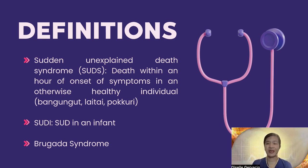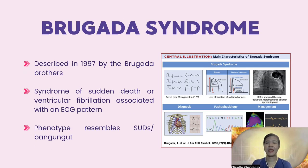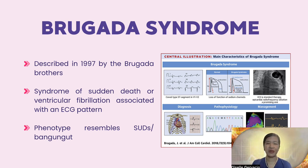Brugada syndrome is a specific subset of SUDS. This syndrome was first described in the 1990s by three Spanish brothers, namely Pedro, Ramon, and Joseph Brugada. It is characterized by a phenotype of sudden unexplained death along with documented ventricular fibrillation or syncope and blackouts associated with a specific ECG pattern. The ECG pattern is characterized by a J-point and cove-type ST elevation in leads V1 and V2. The phenotype resembles SUDS or bangungot.